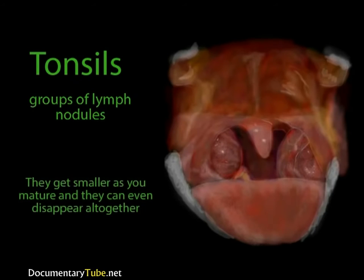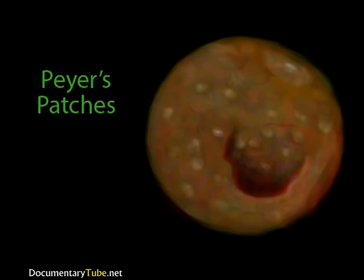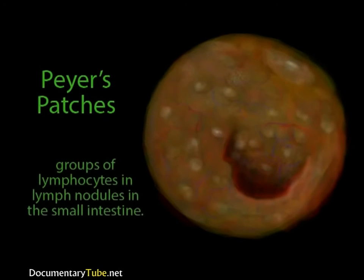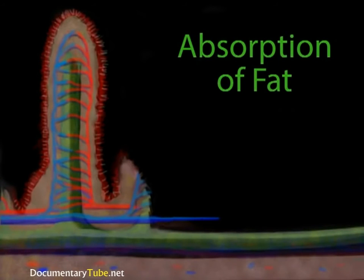Tonsils tend to get smaller as a person matures, and they can actually disappear altogether in an adult. Peyer's patches are very similar to tonsils. They are groups of lymphocytes and lymph nodules in the small intestines, typically found in the last third of the small intestine. Once again, they are strategically located to deal with foreign invaders. The lymphatic system's second function takes place here in the small intestine as well — the absorption of fats.